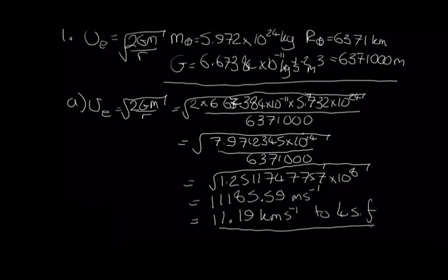It's always worth keeping all of your numbers all the way through until you reach your final answer, then rounding to the correct number of significant figures. Always state how many significant figures you've used, and always remember to include your units. The escape velocity for the Earth is 11.19 kilometers per second.